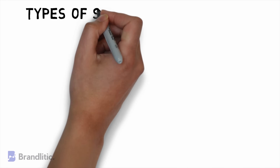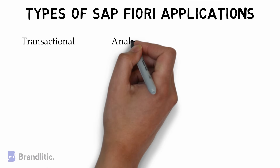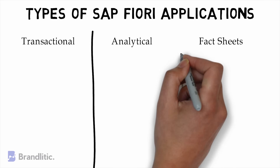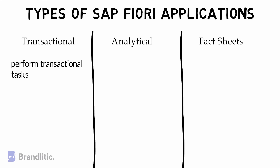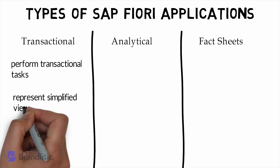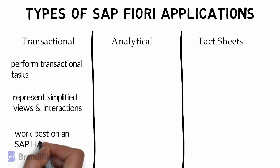Next, let's talk about the types of SAP Fiori applications available. Depending on function and infrastructure, SAP Fiori apps are classified into three categories: Transactional Apps, Analytical Apps, and Fact Sheets. Transactional applications are used to perform transactional tasks like creating a leave request for an employee. They represent a simplified view and interactions with existing business processes, and work best on the SAP HANA database but can also be ported to other databases with acceptable performance.